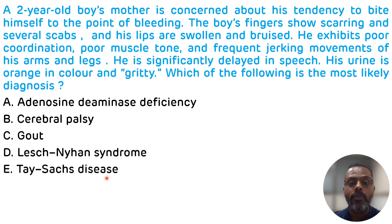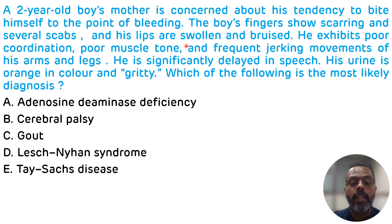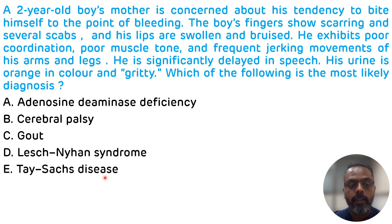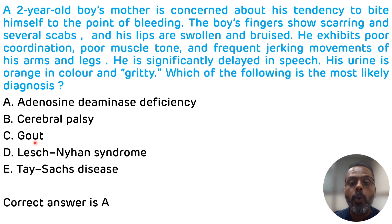This child has neurological symptoms, developmental delay, and one characteristic finding: self-mutilation behavior — evident from biting himself to the point of bleeding, scarring on his fingers, and swollen, bruised lips. Self-mutilation behavior is not seen in adenosine deaminase deficiency, cerebral palsy, or Tay-Sachs disease, so those three options are excluded. Option C, gout, doesn't show neurological symptoms, so it is also excluded.